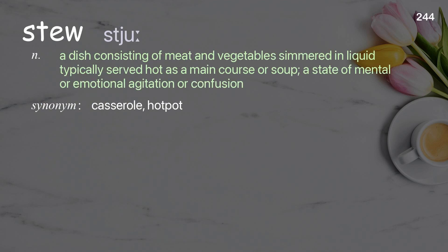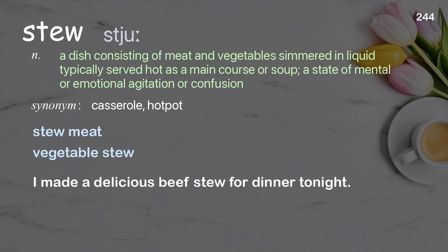Stew: a dish consisting of meat and vegetables simmered in liquid, typically served hot as a main course or soup; a state of mental or emotional agitation or confusion. Examples: stew meat, vegetable stew. I made a delicious beef stew for dinner tonight.